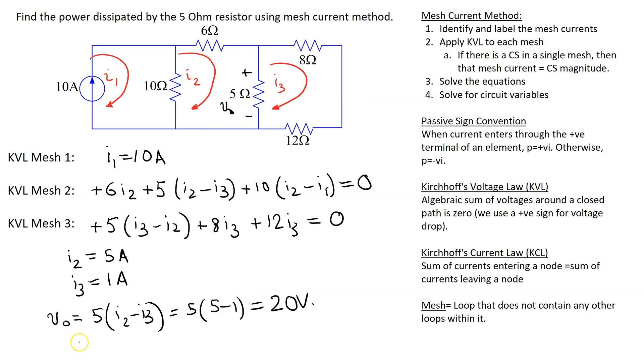And now, the power dissipated in a resistor is V squared over R. And substituting values, this is 20 squared by 5, which is 80 watt. So, the answer is positive because a resistor always dissipates power.